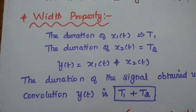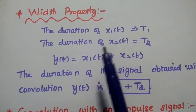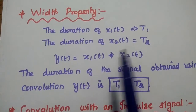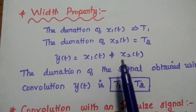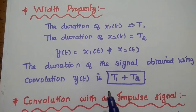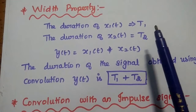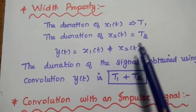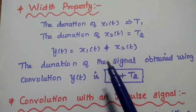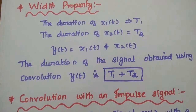The next property is the width property. The duration of X1 of t is T1, and the duration of the second signal is T2. If we convolve these two signals, the duration of the output signal is the addition of these two durations. After convolving these two signals, the duration of the output signal is the sum of T1 and T2. This is called the width property.